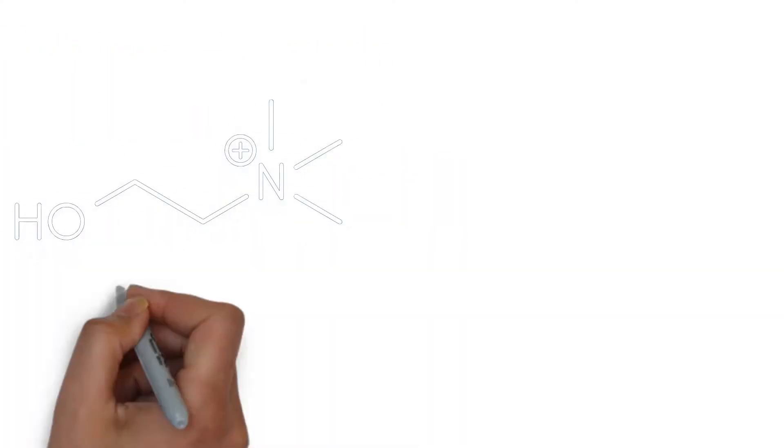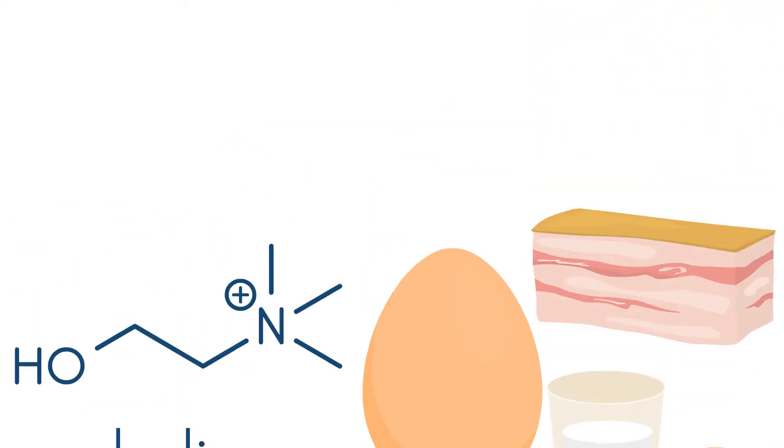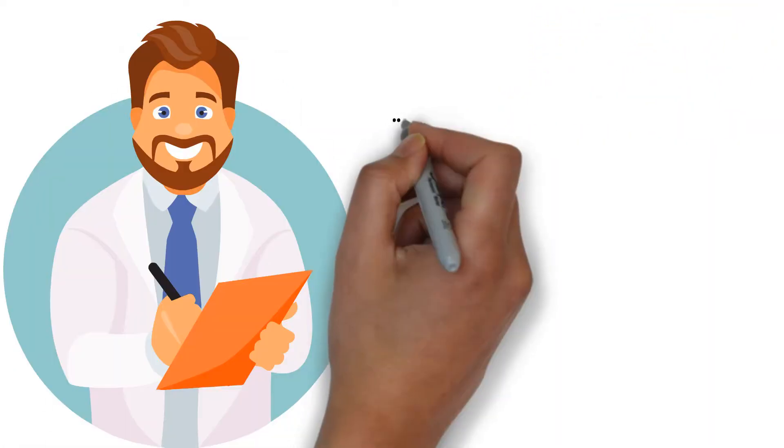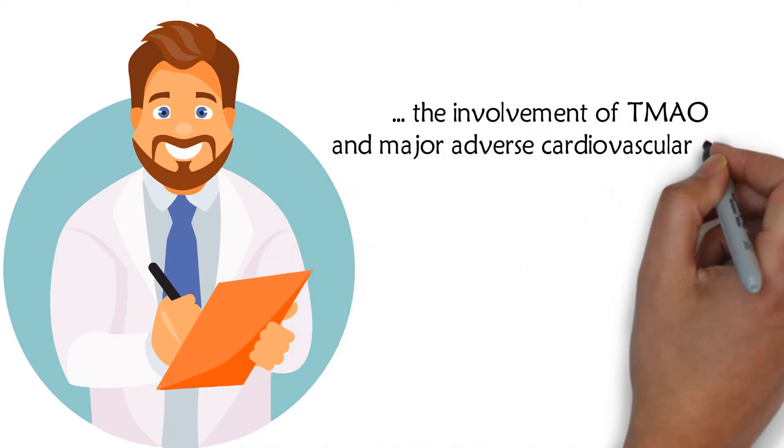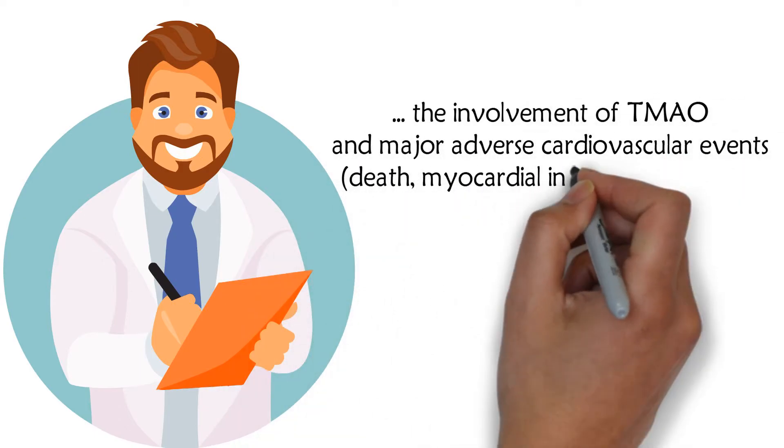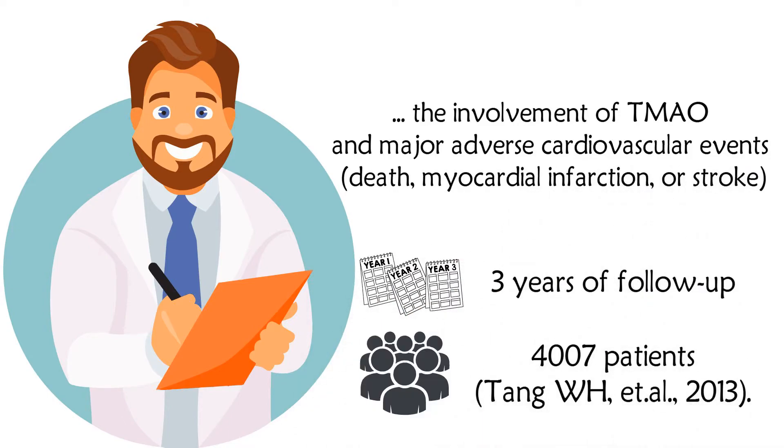Choline is found in animal-derived products like eggs, dairy products, and meat. A study investigated the involvement of TMAO in major adverse cardiovascular events—death, myocardial infarction, or stroke—during 3 years of follow-up in 4,007 patients.